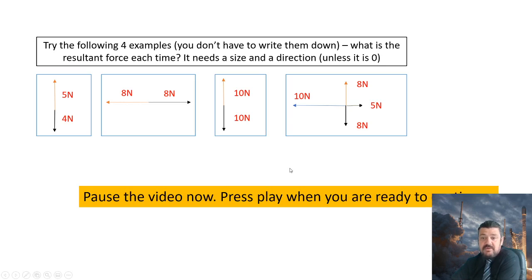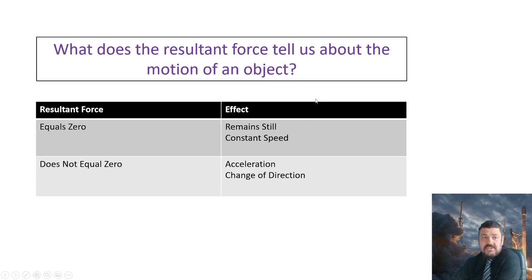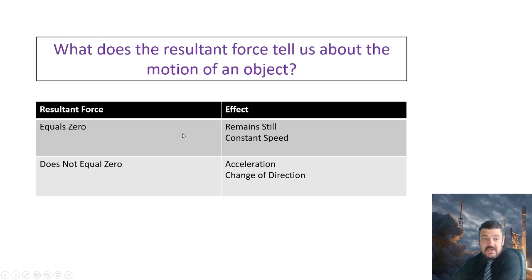Pause the video now and press play when you're ready to continue. So what does all this tell us? What does the resultant force tell us about the motion of an object? Well, if the resultant force equals zero, the object will either remain still or it will stay at a constant speed. If the resultant force does not equal zero, it's either going to accelerate or there's going to be a change of direction. That is all there is to it. The resultant force either equals zero or it doesn't. If it equals zero, nothing's going to happen — there'll be no change. If it doesn't equal zero, something has to change.